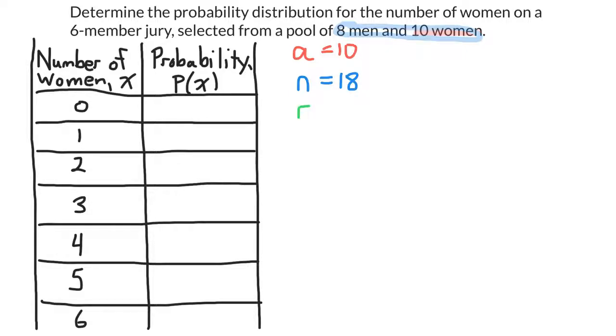R is the number of dependent trials. Well, it's a six-member jury, so there are going to be six selections. That means six trials. So R is six.